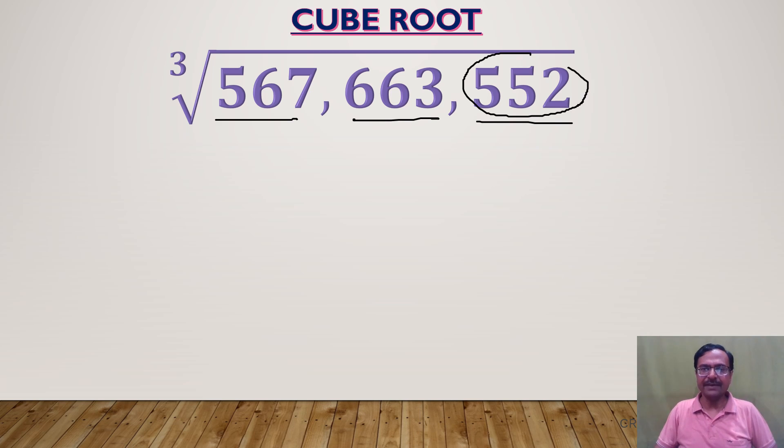The last triplet 552 ends in 2, and there is only one single-digit number whose cube ends in 2, and that is 8. 8 cube is 512, so for this triplet you just have to see this digit 2 and find a single digit whose cube ends in that digit. So 8 cube ends in 2, so last part of my answer is 8.